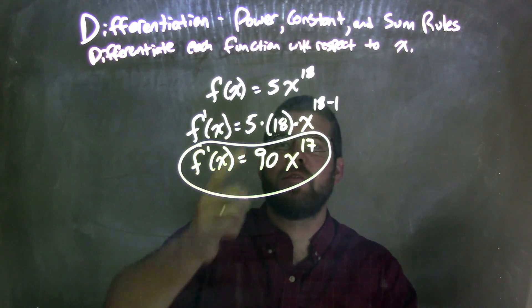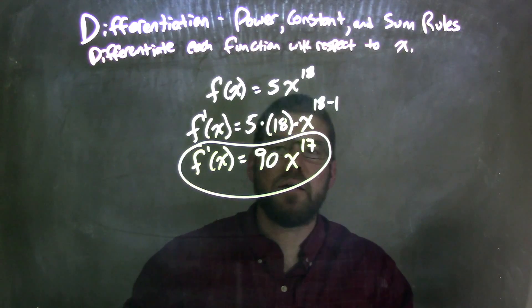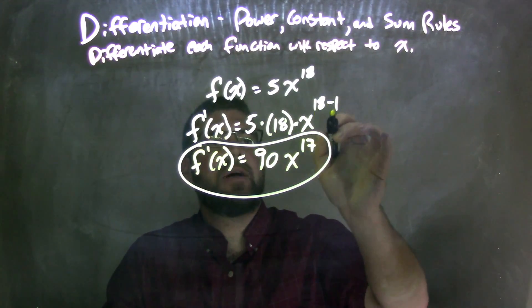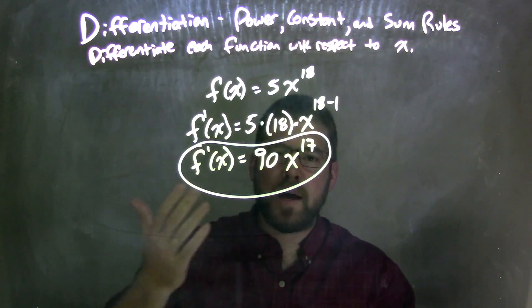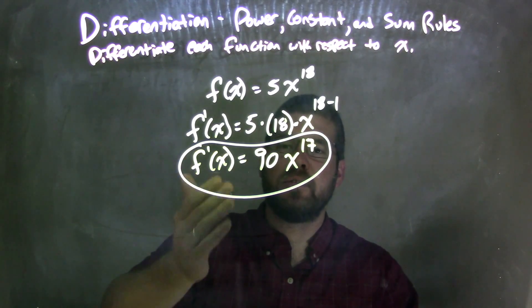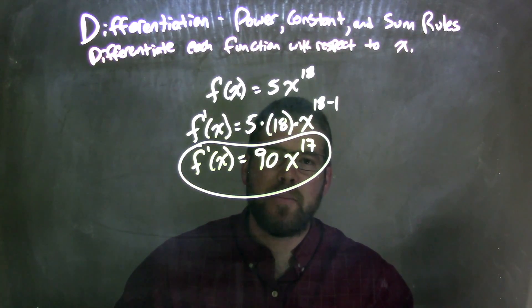And now it's all multiplication going on here. So then 5 times 18 came out to be 90. And then the 18 minus 1 is 17. And so our final answer, f prime of x is equal to 90x to the 17th power.